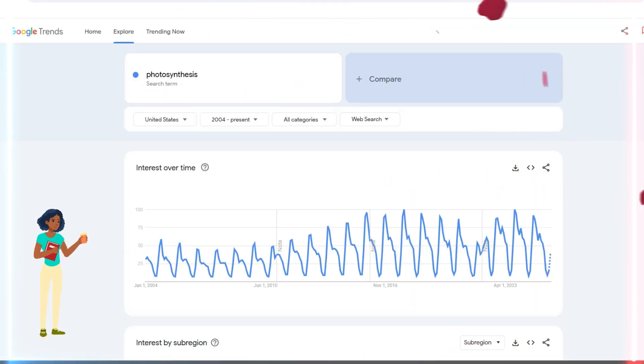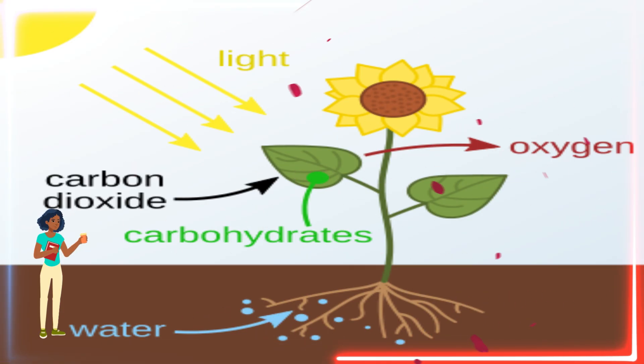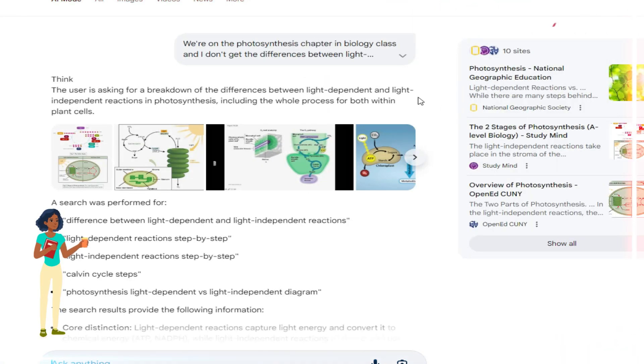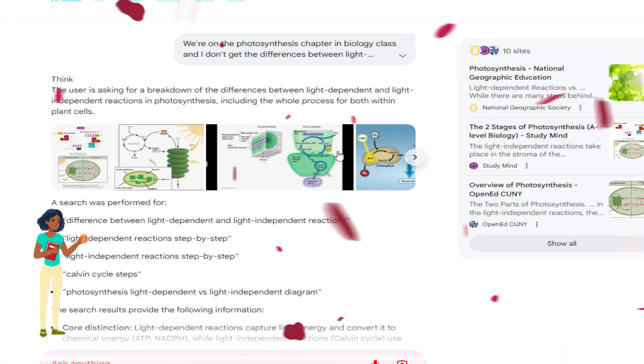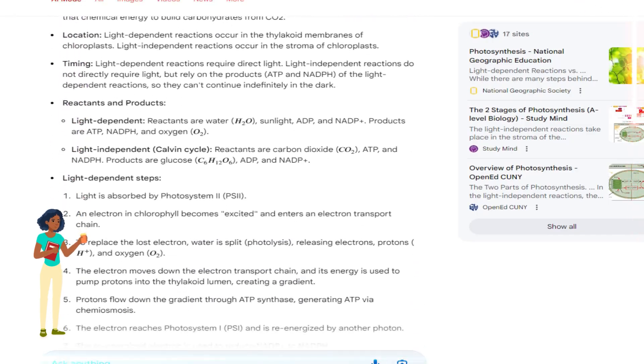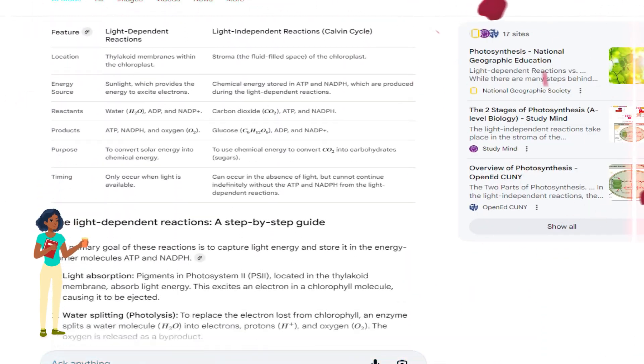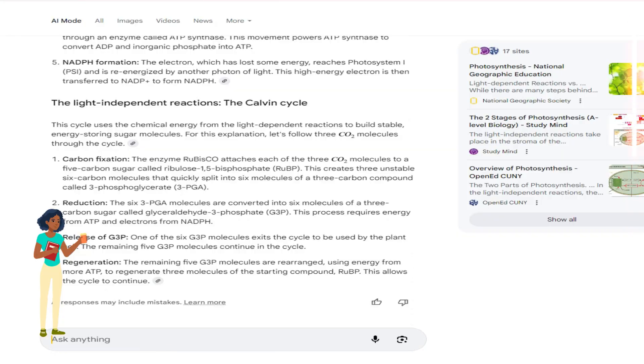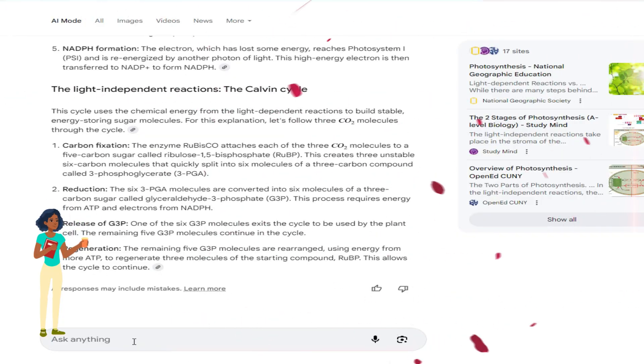Searches for photosynthesis spike every year during back-to-school time. Ready to learn more? Explore photosynthesis further with AI mode in Google search. You can ask any question that comes to mind and get a helpful, AI-powered response complete with relevant sites on the web. From there, it's easy to ask follow-up questions or explore a new topic of interest.